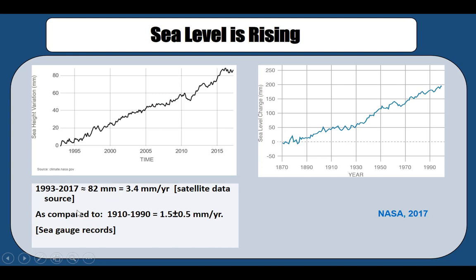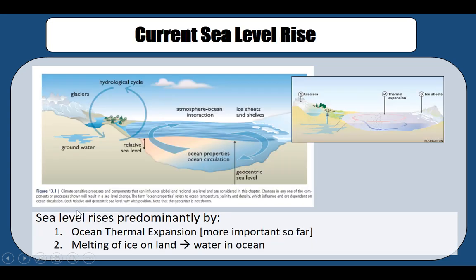As compared to 1910 to 1990, where the mean sea level rose just about 1.5 millimeters per year, presently sea level is rising much faster than in the past. The main causes include glaciers melting, thermal expansion, and ice sheet melting. Ocean thermal expansion is the most important one — as temperature rises, water molecules in the ocean expand and require more space, causing sea level to rise.